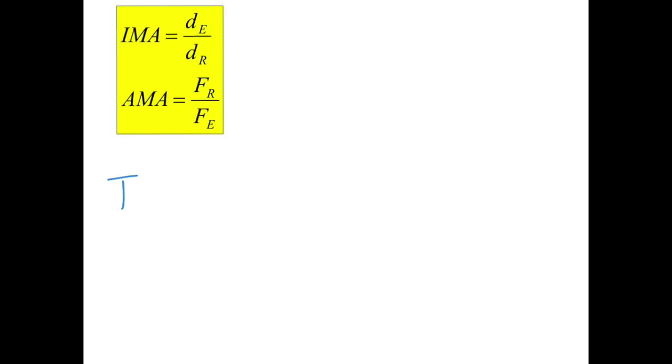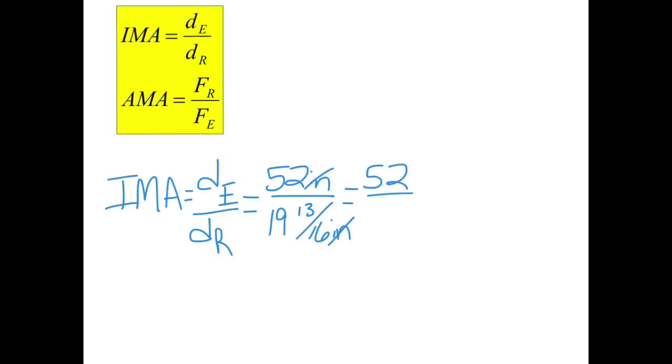Alright, so IMA equals distance effort over my distance resistance. The length of that ramp I measured to be 52 inches. And the height going up to the trailer from the ground was 19 and 13 sixteenths of an inch. I'm going to simplify it a little bit more before I plug it into my calculator. Again, I know that inches are going to cancel out.